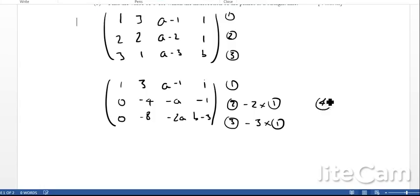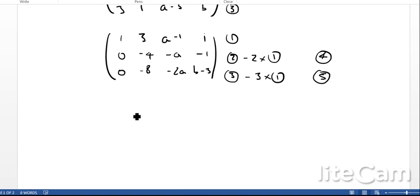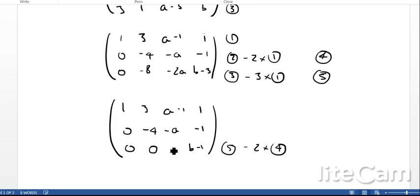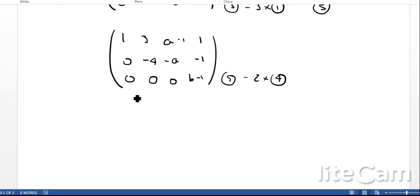To make this slightly easier, let's label this as equation 4 and this as equation 5. The next step: I'll keep the first two lines, so 1, 3, a minus 1, and 1; 0, minus 4, minus a, minus 1. Then in the last row, if I do equation 5 take away 2 times equation 4, I'll get a 0 here, 0 here, 0 here, and b minus 1 here. This immediately shows that we're not going to have any unique solution. We have all zeros on this bottom here. That cannot be a unique solution. So there we go, we've shown that there's no unique solution.